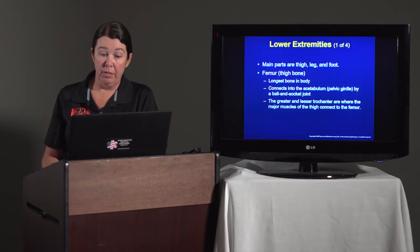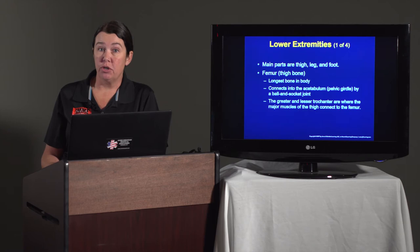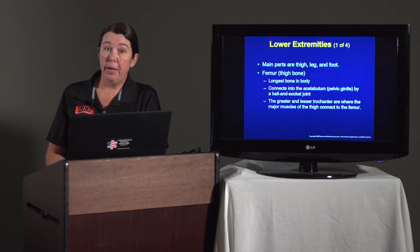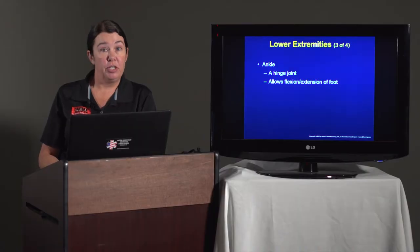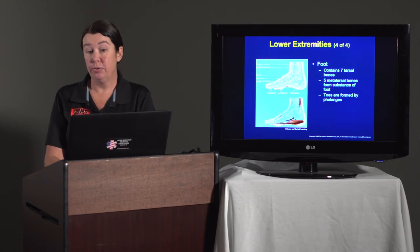The main parts of the lower extremity include the leg, the thigh, and the foot. The femur is the large bone in the thigh — it's the largest bone in the body. It connects to the acetabulum, or the pelvic girdle, by a ball and socket joint. The greater and lesser trochanter are where the major muscles of the thigh connect to the femur. The knee connects the upper leg to the lower leg. The lower leg consists of the tibia, or shin bone, and the fibula. Then there's an ankle, which is a hinge joint allowing for flexion and extension of the foot, and then five toes on each foot.